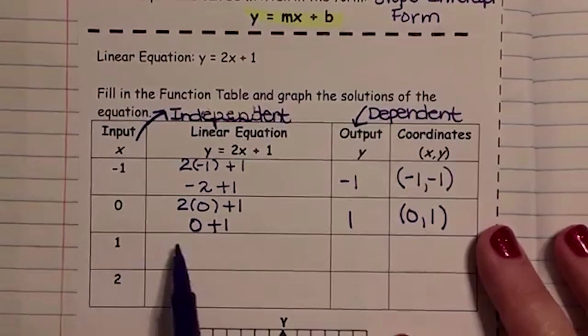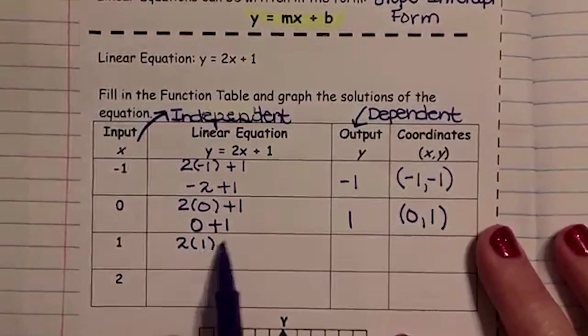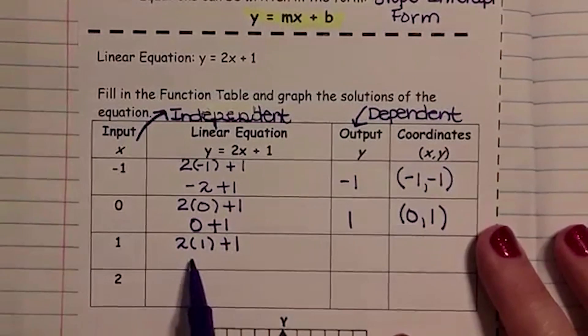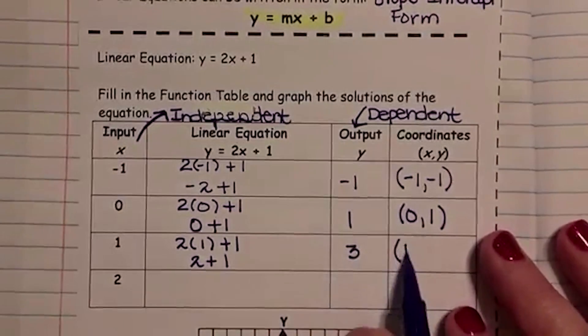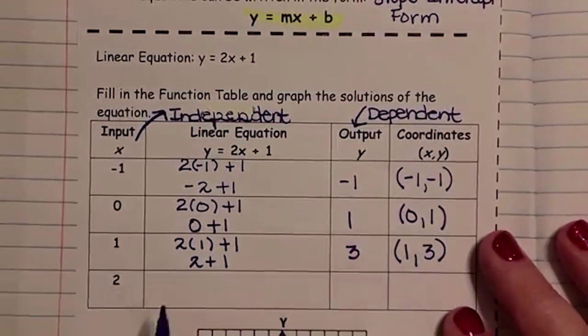The next one, 2 times 1 plus 1. 2 times 1 is 2. 2 plus 1 is 3. 1, 3. Next coordinate.